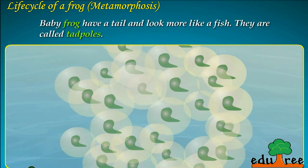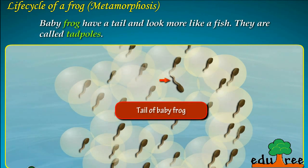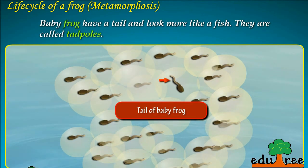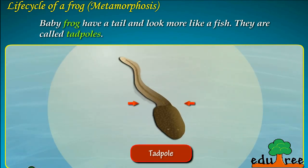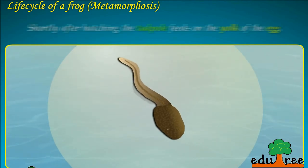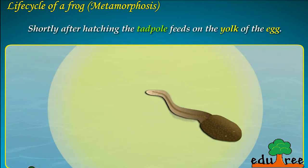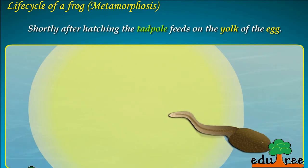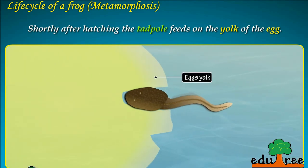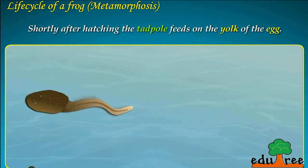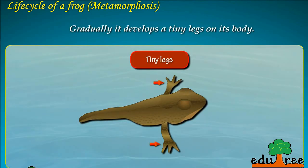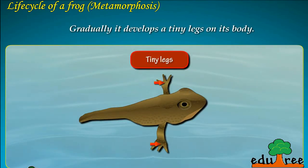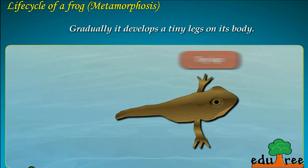Baby frogs have a tail and look more like a fish. They are called tadpoles. Shortly after hatching, the tadpole feeds on the yolk of the egg. Gradually, it develops tiny legs on its body.